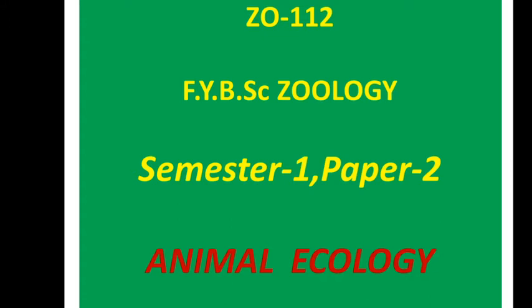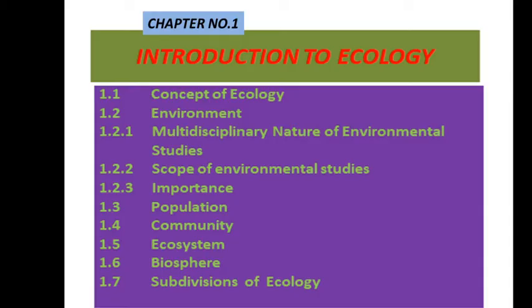The name of the paper is Animal Ecology. We will now see Chapter Number 1: Introduction to Ecology. What it consists of: Concept of Ecology, Environment, Multidisciplinary Nature of Environmental Studies, Scope of Environmental Studies, Importance, Population, Community, Ecosystem, Biosphere, and Subdivisions of Ecology — all these points are to be covered.